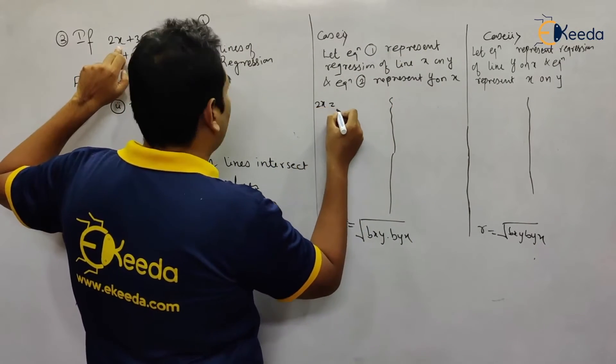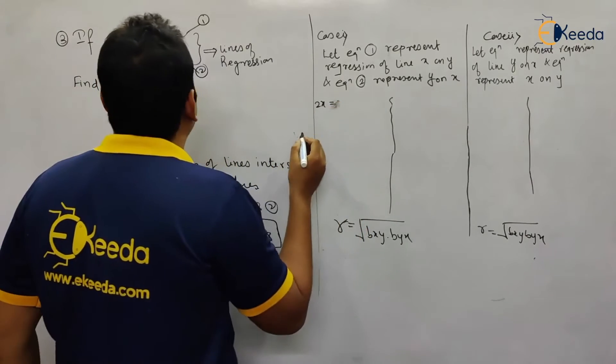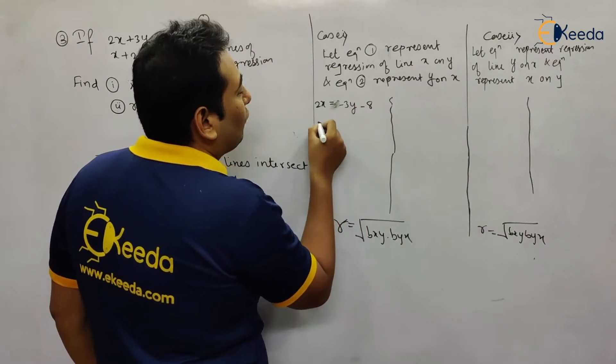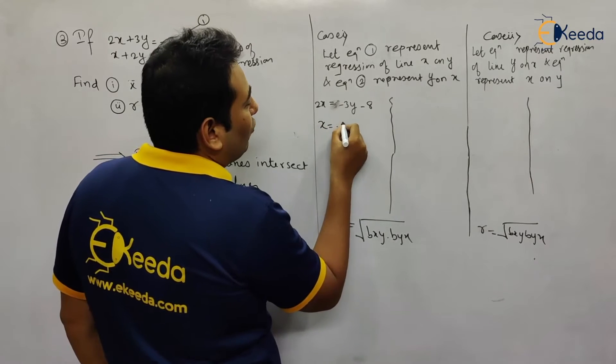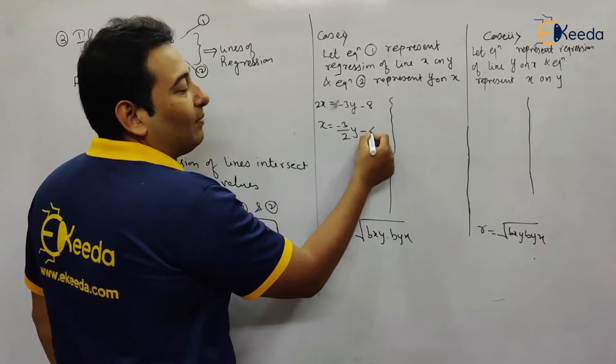So we have 2x equals, let's take 3y to that side, so minus 3y minus 8. From this, x equals -3/2 y minus 8/2, and 8/2 is 4.